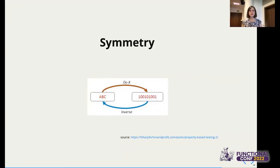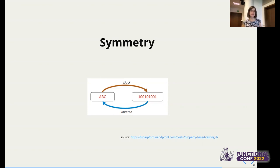The last useful pattern is symmetry — something I like a lot. For example, if you have a serialization method and a deserialization method, you test them together: take generated data, serialize it, deserialize it back, and verify you end up with the same result you started with. Another example: write to a database, then read back and verify. Symmetry is not very creative, but it can find a lot of bugs for you.